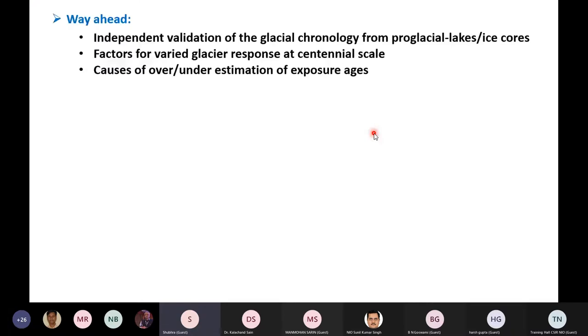Also, we observed that always the OSL and the exposure ages, they are not in conformation with each other, particularly in sectors of northwestern and western Himalaya, where the exposure ages are grossly overestimated. So we did propose that there are several geological processes which are contributing to this overestimation of the ages, like, for example, contribution of a lot of moraine boulders from the smaller glacial tributaries, which have a short distance of transport. But all these hypotheses, they need to be tested rigorously with a greater database.